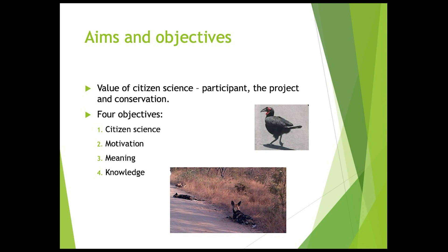The four objectives identified are: to conceptualize citizen science and summarize current knowledge about the contribution of citizen science in conservation; to determine what motivates tourists to participate in photographic competitions in Kruger National Park; to investigate the meaning of participation to the participant; and to determine the participant's knowledge on the basic ecology and conservation status of the wild dog and cheetah.